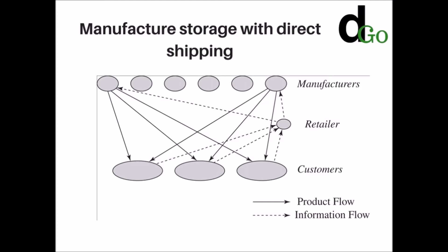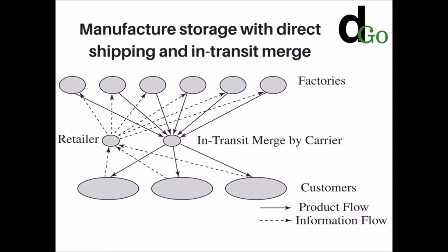This type of direct shipping is used by eBags and Nordstrom.com. The second option is manufacturer storage with direct shipping and in-transit merge. Here, each product in the order is directly sent from its manufacturer to the end customer, and the in-transit merge combines pieces of the order coming from different locations so the customer receives a single delivery. This system is used by Dell.